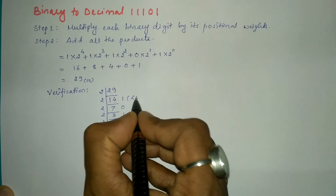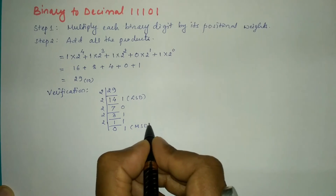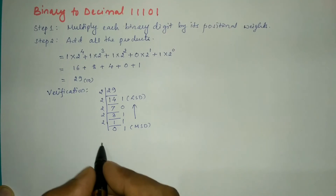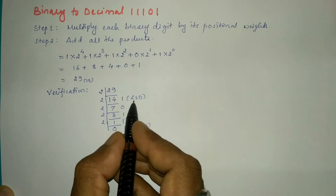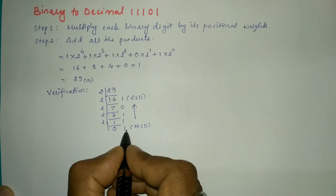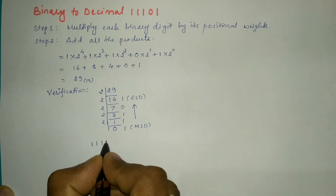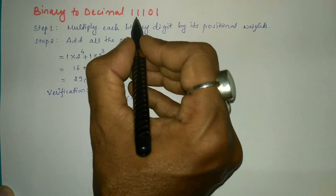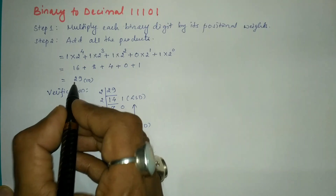The first remainder is called the least significant digit and the last remainder is called the most significant digit. We write the binary equivalent of 29 from most significant digit to least significant digit, i.e., from bottom to top: 1 1 1 0 1. We can see that we got the same bits as the given binary number, so the decimal value we obtained, 29, is absolutely correct.